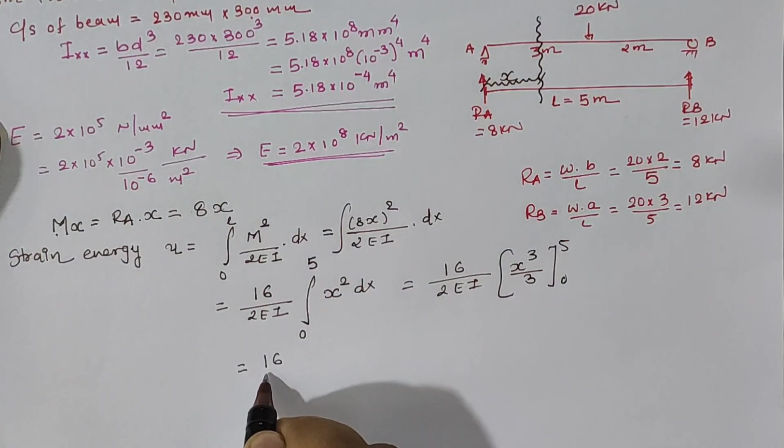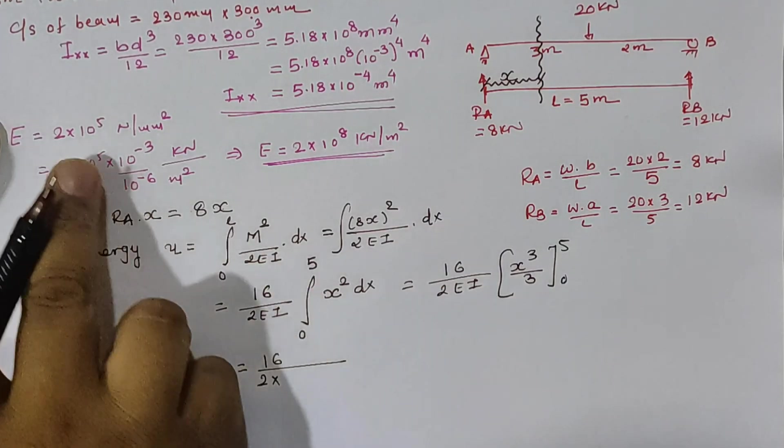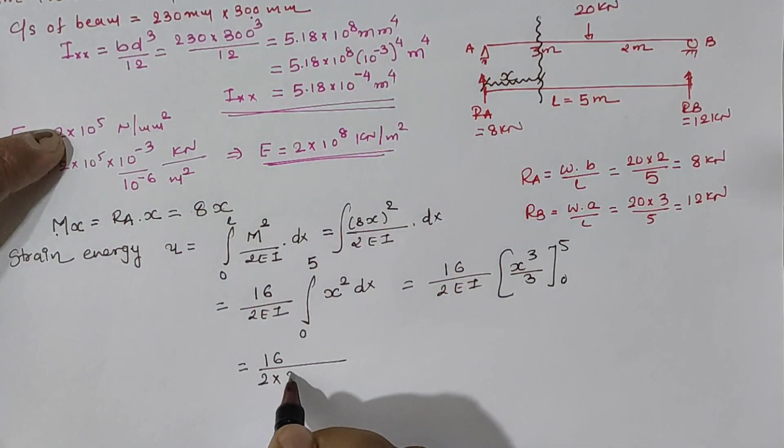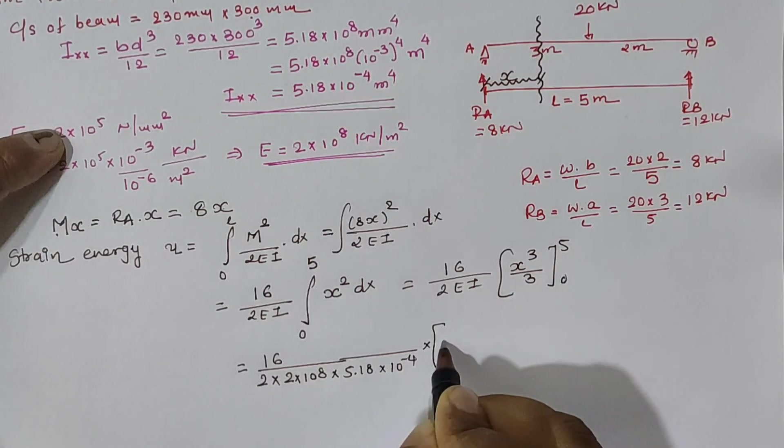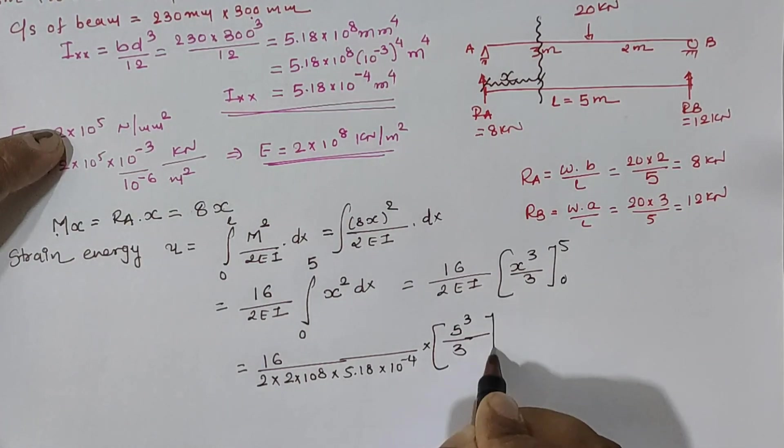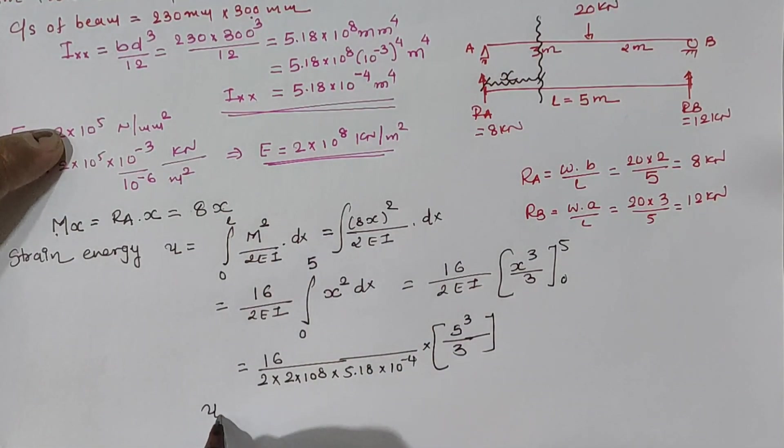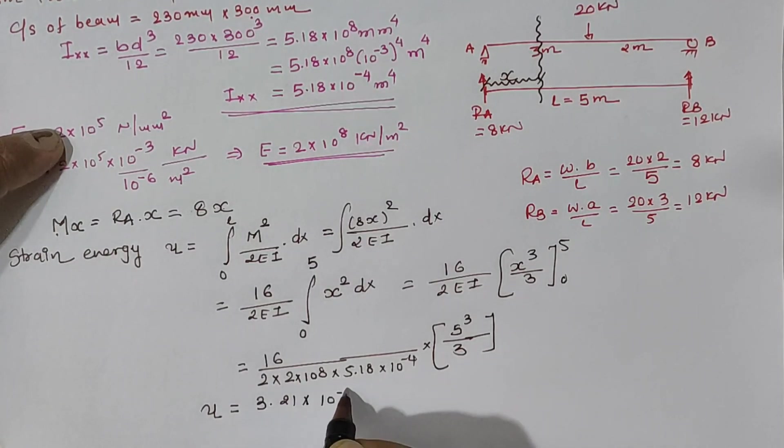Now, solving this term we will have 16 by 2EI, x² integration as x³ by 3 and if we remove this limit, we will have 16 as a constant value to EI as 2 x 10⁸ multiplied by 5.18 x 10⁻⁴ into x³. It means 5³. Now, solving this term we have strain energy value as 3.21 into 10⁻³ kilonewton meter.